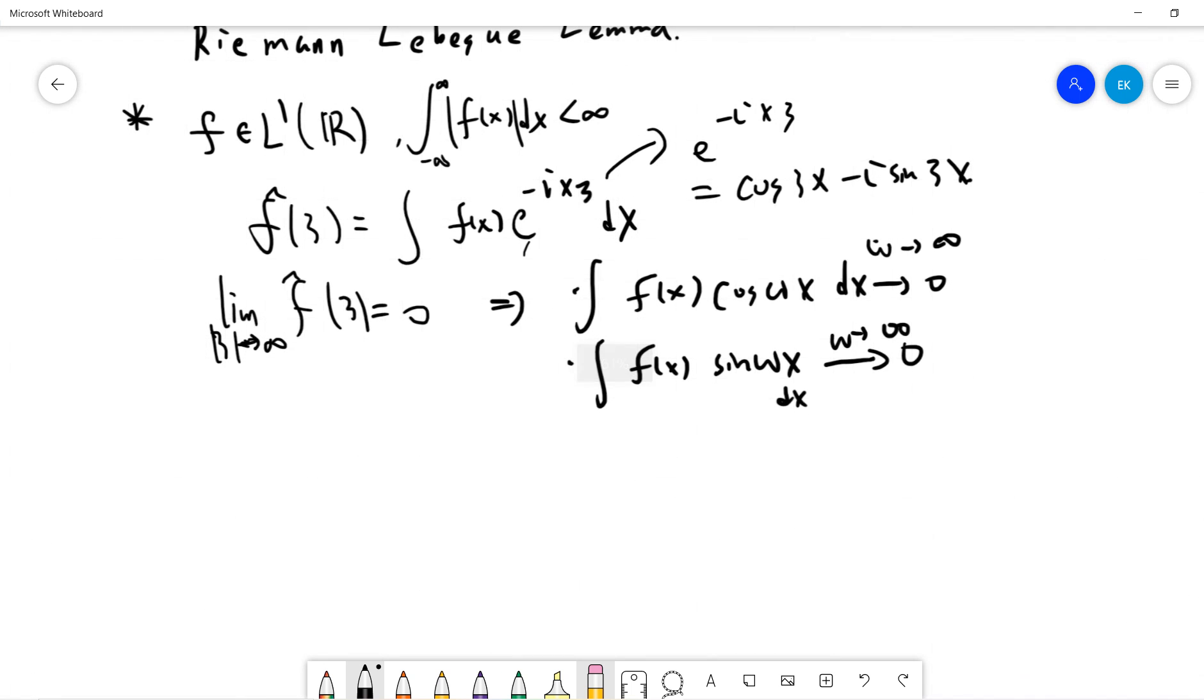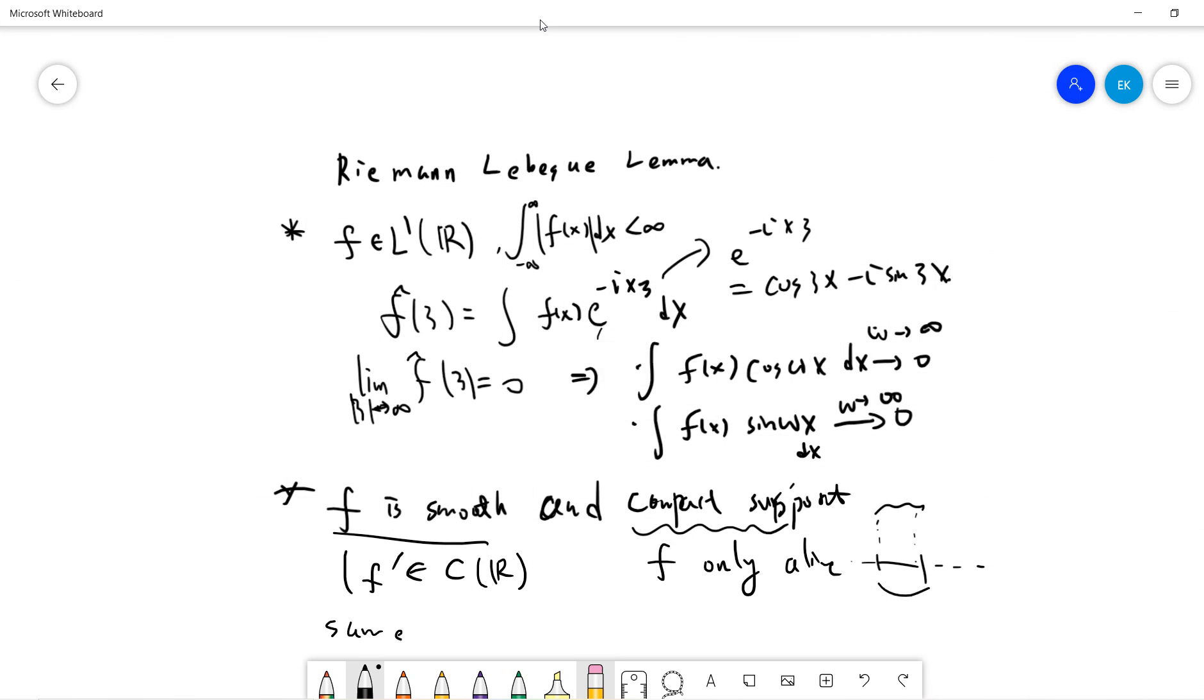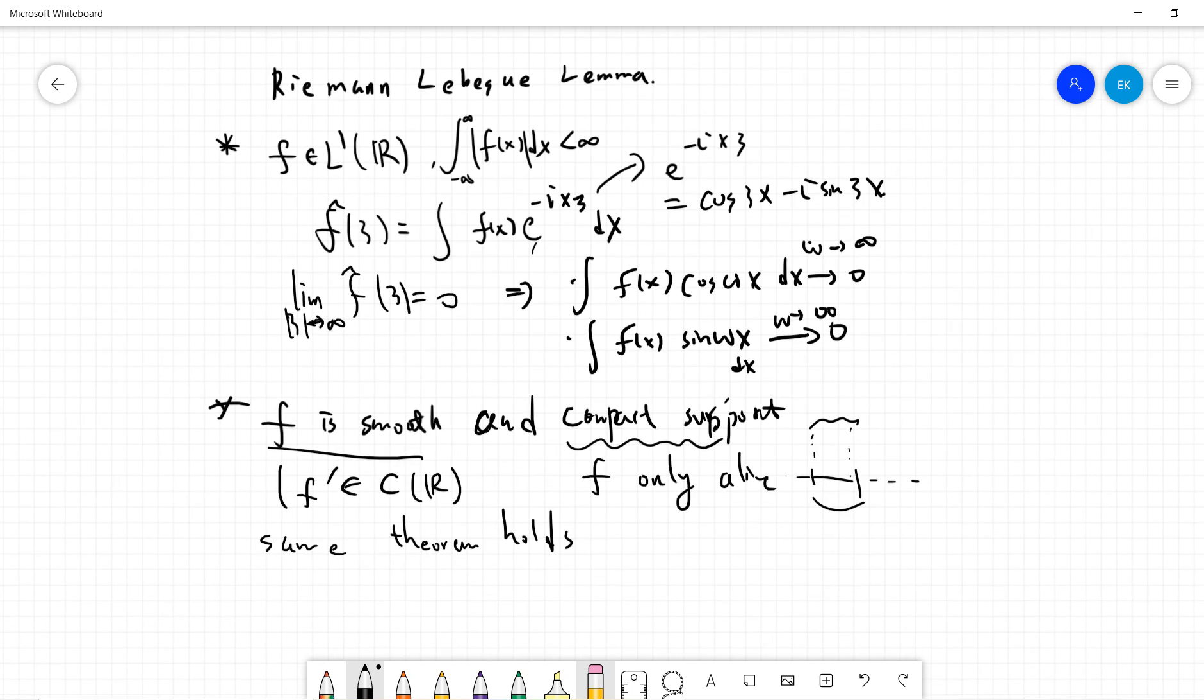Okay, so this is the first setting. And the second setting is usually much easier to prove. The second setting is that I just say that f is smooth and compact support. This is easier because f is smooth means that f differentiation is also a continuous function in R. And also compact support means that f is non-zero only for a compact region, so f only survives in some compact region and elsewhere becomes zero. And the same theorem holds.